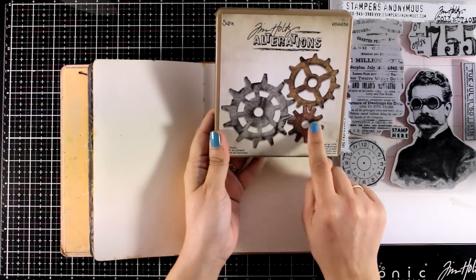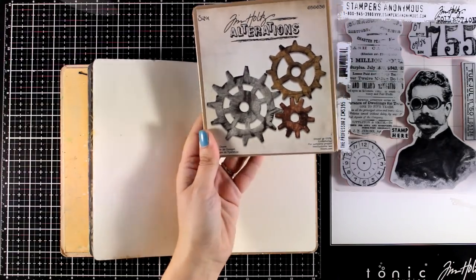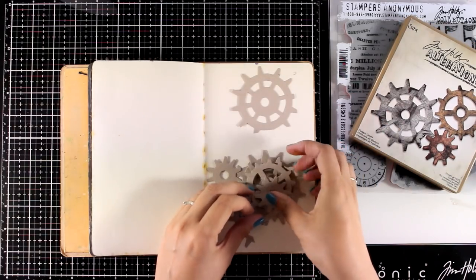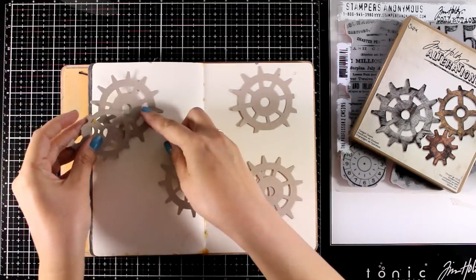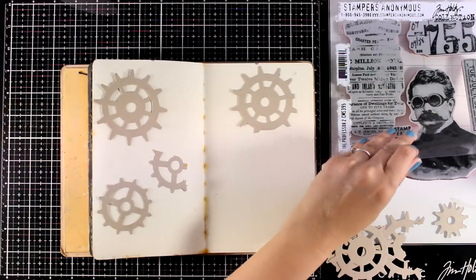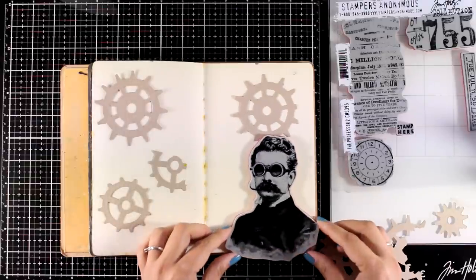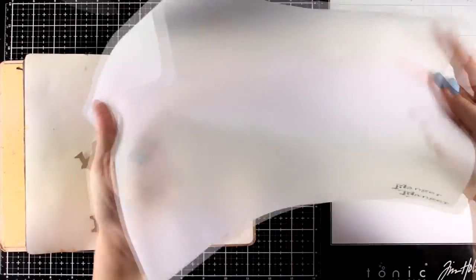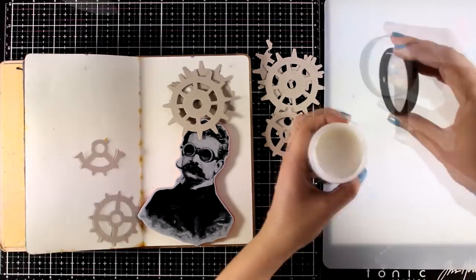Now I'm going to bring in a very old C6 die. This was also designed by Tim Holtz and it has all those gears on top. I went ahead and cut them out using craft paper. I'm going to lay them on top of my pages and I know that I'm going to use the professor and he's probably going to go right there. So having that in mind I'm going to decide where all those gears are going to go. I'm working on my Ranger Silicone Mat on the side.